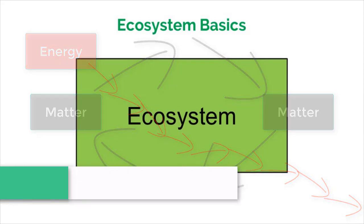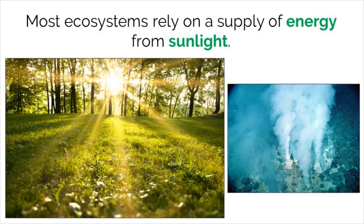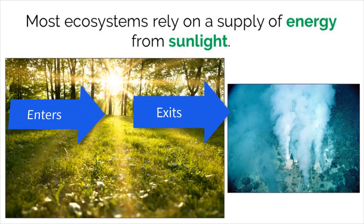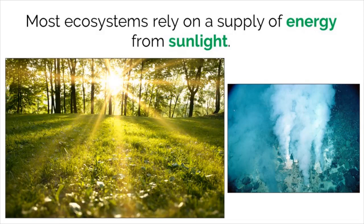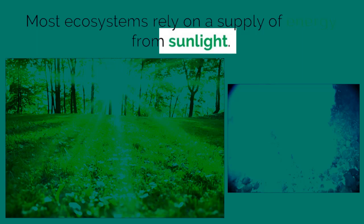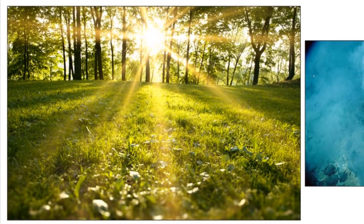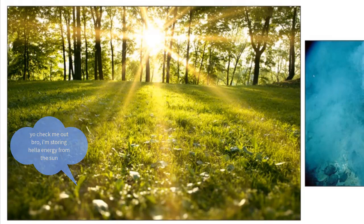Now, on to the important stuff. We now know that energy flows through ecosystems, meaning it enters and exits. So how does it actually enter? The vast majority of ecosystems on our planet get their steady supply of energy from sunlight. The sunlight is converted into chemical energy that exists in carbon compounds through the process of photosynthesis.